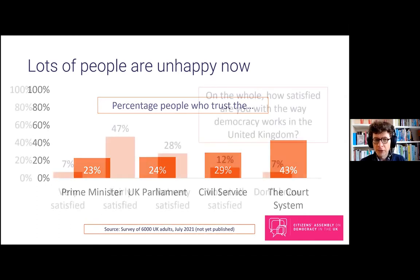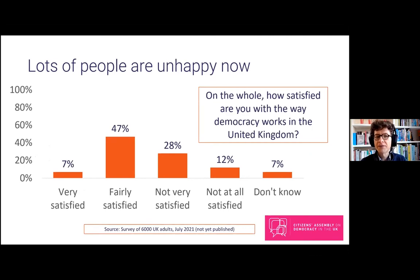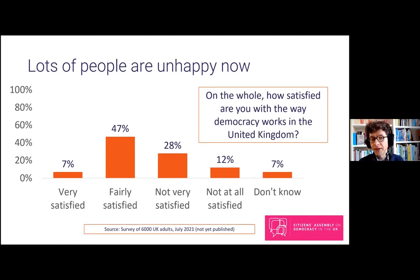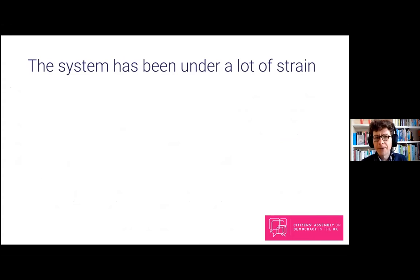It's not all doom and gloom. We also asked: on the whole, how satisfied are you with the way democracy works in the United Kingdom? Only 7% said they were very satisfied, but 47% — almost half — said they were fairly satisfied. Adding those two groups together, more than half said they were at least somewhat satisfied with the system. Then 28% said not very satisfied, 12% — one in eight — said not at all satisfied, and 7% said they didn't know. So there's quite a spread of opinion, and for quite a long time there's been a general sense that people feel not necessarily very happy with how our democracy works.